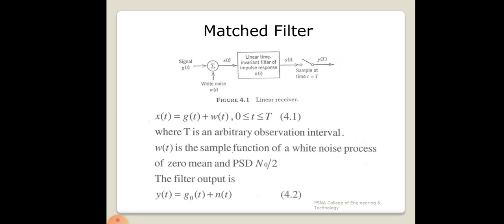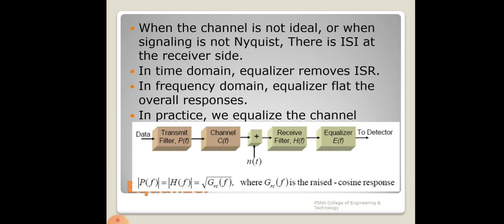When the channel is not ideal and signaling requirements are not met, there will surely be inter-symbol interference at the receiver. In the time domain, the equalizer removes the ISI; in the frequency domain, it flattens the frequency response. The equalization block diagram shows the transmit filter p(f), channel c(f), noise adder, receiver filter h(f), and equalizer e(f).